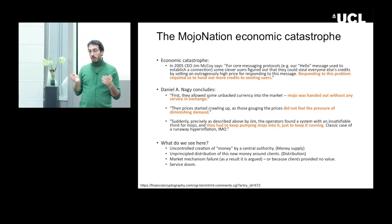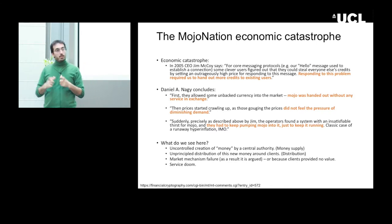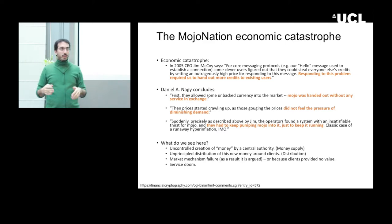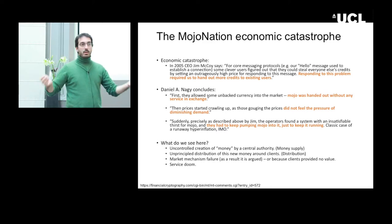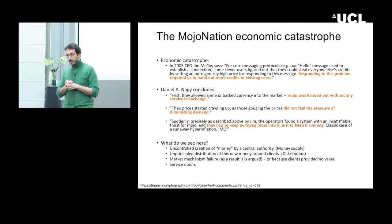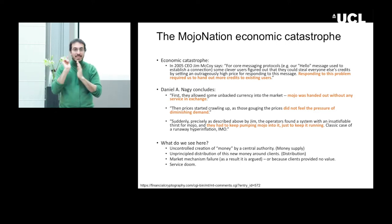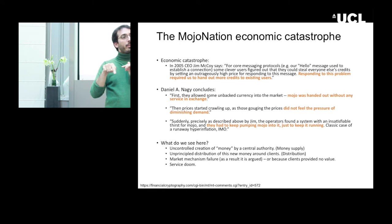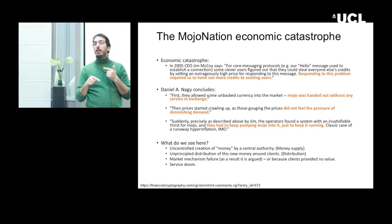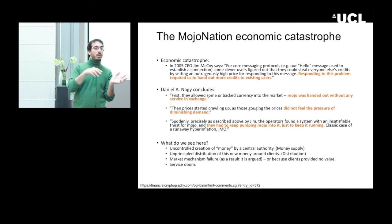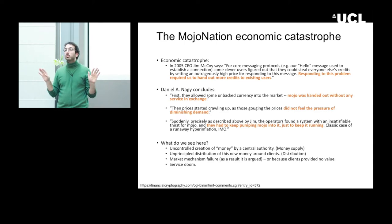What happened here, according to what a currency and monetary system is about? First, there was uncontrolled creation — a printing press of money running, creating an oversupply of currency. Then there was unprincipled distribution — they just kept giving money to clients so they could continue working. As a result, the market collapsed. They kept pumping money in, the market collapsed, and the service was doomed.